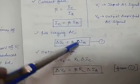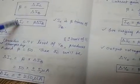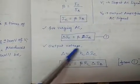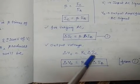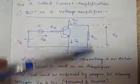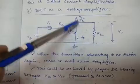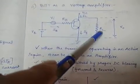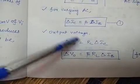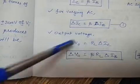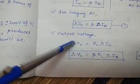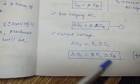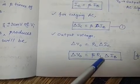For varying AC signals, delta-Ic equals beta times delta-Ib — this is equation one. For output voltage, delta-V0 equals RL times delta-Ic, because V0 is the voltage drop across RL and Ic is the current flowing through RL. Substituting delta-Ic equals beta times delta-Ib, we get delta-V0 equals beta times RL times delta-Ib.